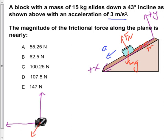mg is acting at an angle here of theta, which is the same as the angle of the incline, which is 43 degrees. Theta is equal to 43 degrees.